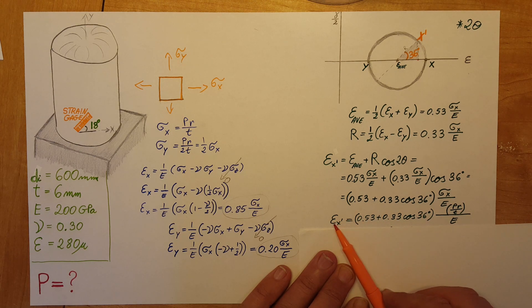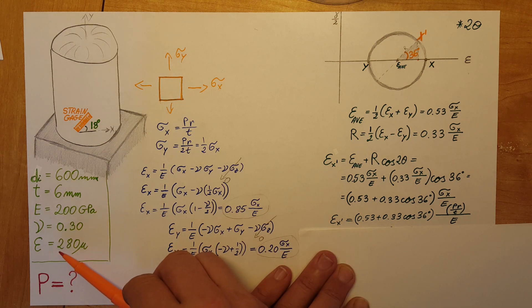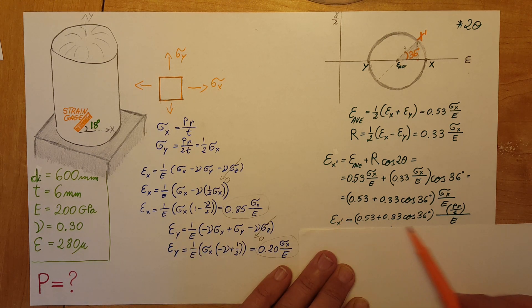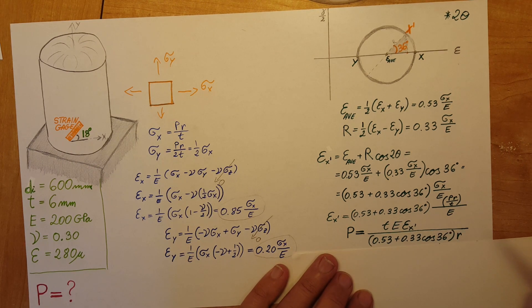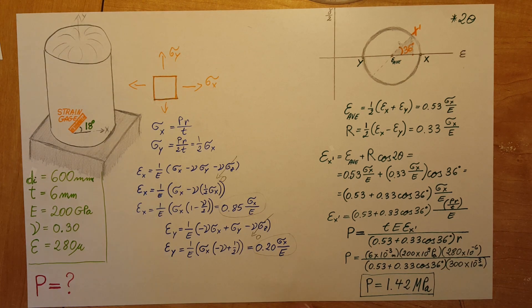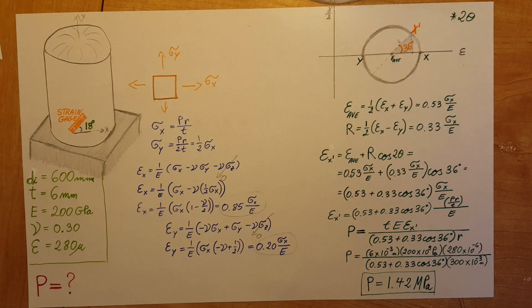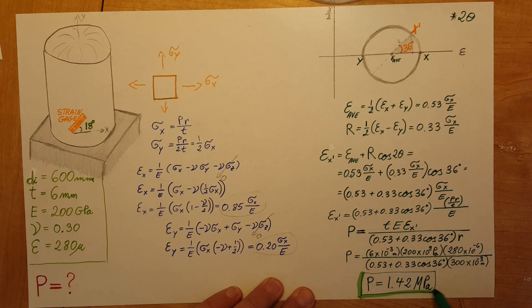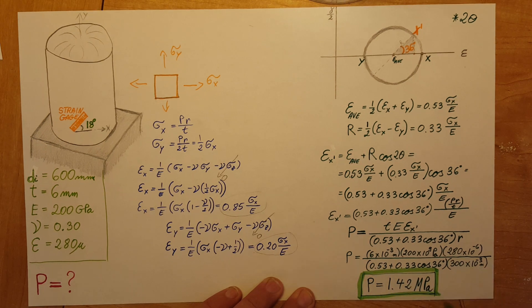Now we know every single thing in this formula except P. We can solve for it, plug in all our unknowns, and we are able to calculate our final answer for the pressure inside the vessel. And there you go.